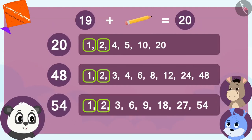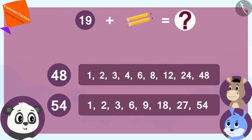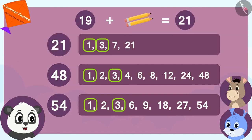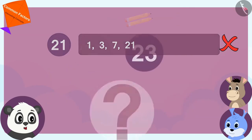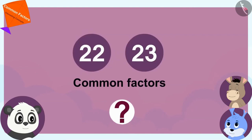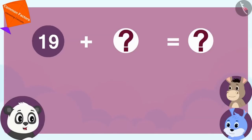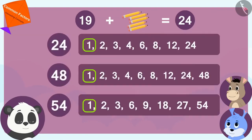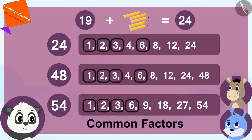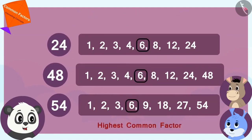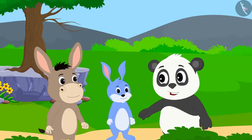Bola and Bunny liked Golu's suggestion very much. Bola immediately found the common factors of 48 and 54. These numbers are the common factors of 48 and 54, and 6 is the highest common factor of these numbers. So we have to increase the number of Golu's 19 pencils in such a way that the increased number also has 6 as a factor. If Golu adds one pencil, the total is 20, but 20, 48 and 54 do not have 6 as a common factor. If he adds one more, the total is 21 pencils, but still we cannot get 6 as a common factor.